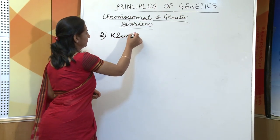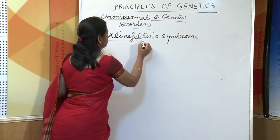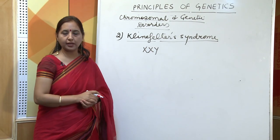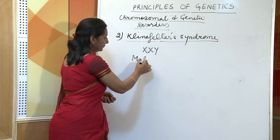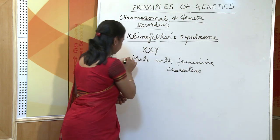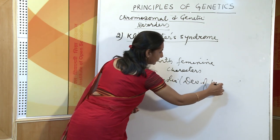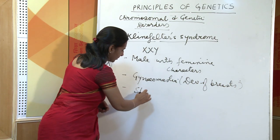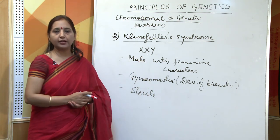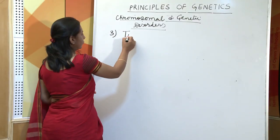The next disorder is Klinefelter syndrome. In this disorder, there is an extra chromosome and the genotype becomes XXY instead of XY. The individual is a male with feminine characters. There is gynecomastia — that is, development of breasts — and such males are sterile, meaning they are not able to reproduce.